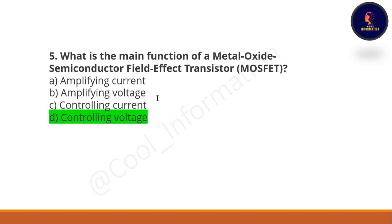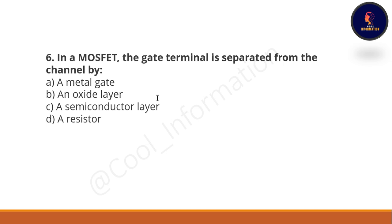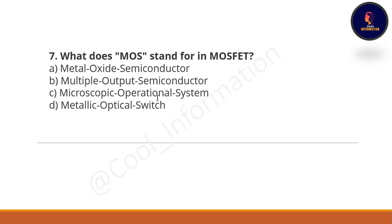In a MOSFET, the gate terminal is separated from the channel by — option A: a metal gate, option B: an oxide layer, option C: a semiconductor layer, option D: a resistor. The correct option is an oxide layer. Seventh question: What does MOS stand for in MOSFET?